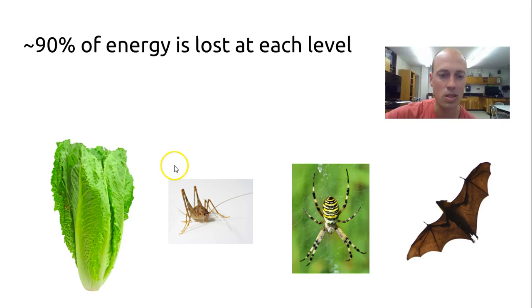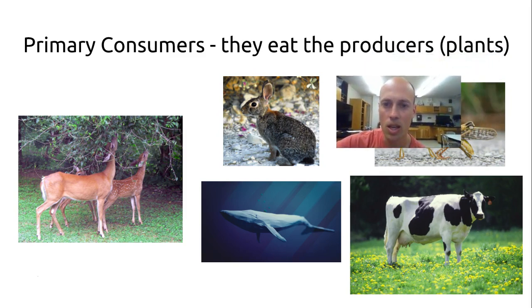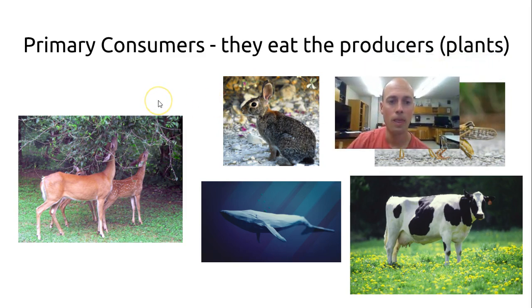And it's also the reason that primary consumers are some of the largest and have the most biomass. There's huge herds of bison. Think of the largest animals on the planet. You think of blue whales, elephants, hippos. Those are all primary consumers that eat plants because that is the most energy that is available.